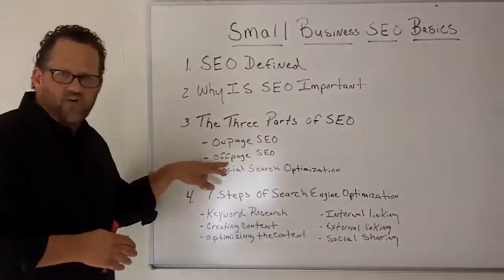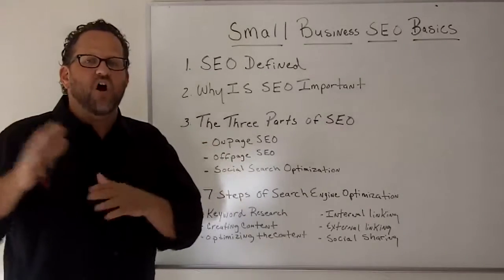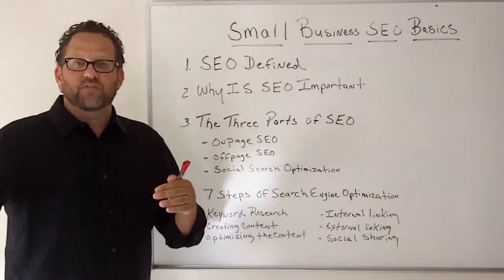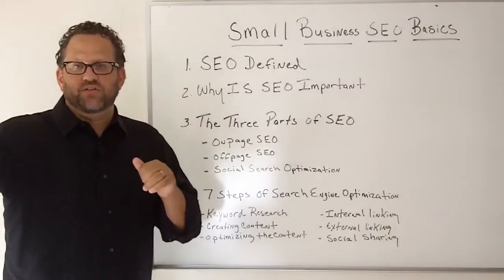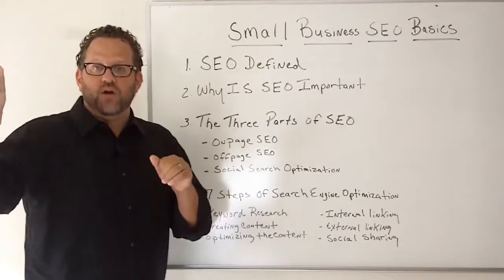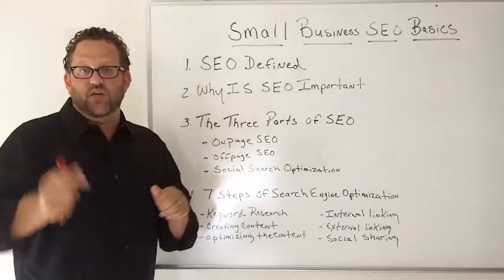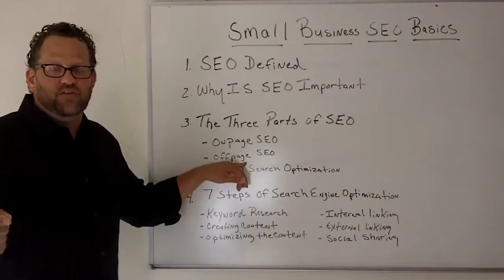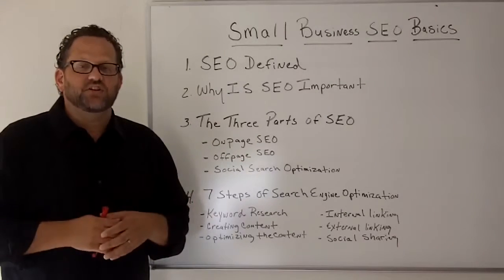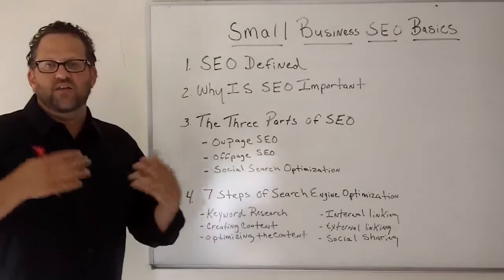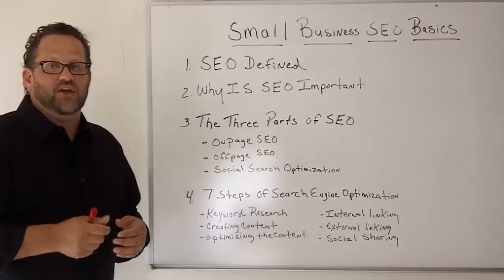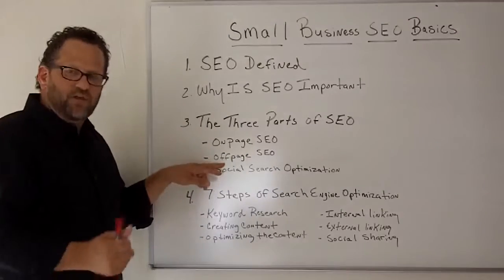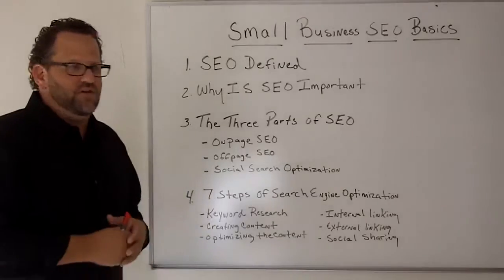The second part of SEO is off-page SEO — things happening off your website. Basically this means links coming from other websites into your website: backlinks, which are hyperlinked words and phrases that link back to a page on the internet. Off-page SEO is getting more links from third-party websites back to yours. That's an indication your website has great content and others want to share it. In fact, building backlinks is probably the most important thing you can do from an SEO perspective.